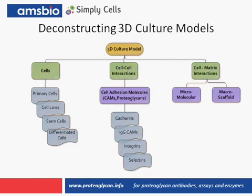Let's now deconstruct the 3D matrix. Cell function is controlled by the totality of the 3D environment that provides the physical scaffolding, cell-cell communication, migratory path, and other cues. The first aspect, of course, is the cells — ranging from primary cells to stem cells or any combination thereof. Within the 3D model, the cells interact between themselves. Cell-cell interactions are driven by cell adhesion molecules, or CAMs. These are proteoglycans found on the outside surface of the cells, and CAMs have many distinct domains that allow them to mediate cell-cell contacts by binding to specific partner proteins. These cell-cell interactions can be between the same cell type or between different cell types, for example in a co-culture experiment.